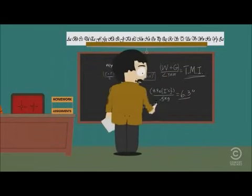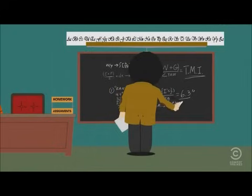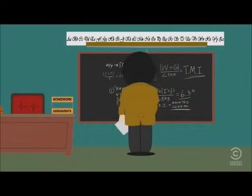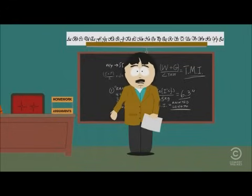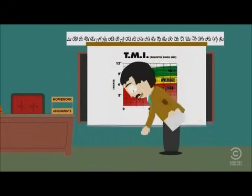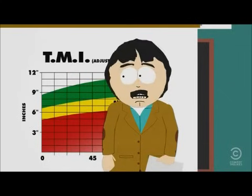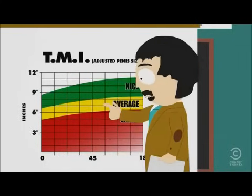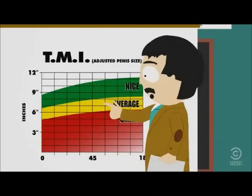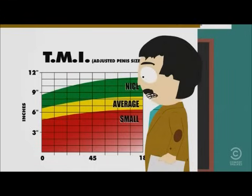Randy's length is 4.4 inches, but his adjusted length is 6.3. So how does our example person, Randy, compare to others on the TMI scale? By referring again to the TMI chart, we see that a TMI of 6.3 is 0.8 inches more than the national average.